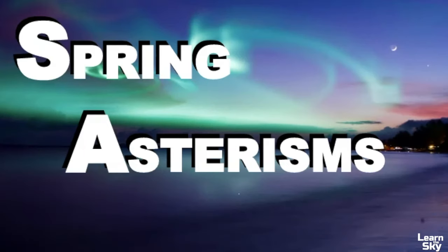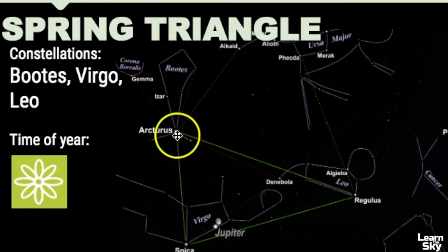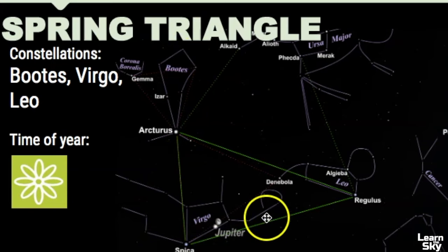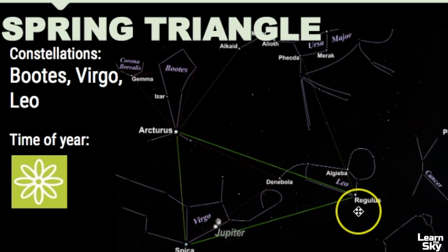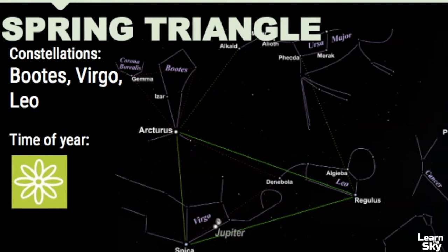Now let's look at some asterisms that can be seen in the spring sky. The first is the Spring Triangle, and this pattern is made up of the brightest stars in three different constellations: the star Arcturus in the constellation Boötes, the star Spica in Virgo, and then Regulus in Leo. There are some different pronunciations — I've heard Regulus or Regulus — but I've also seen pictures connecting Denebola, which is the tail star of the lion, and connecting Spica and Arcturus.